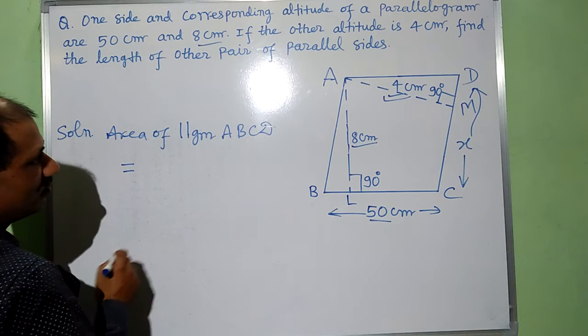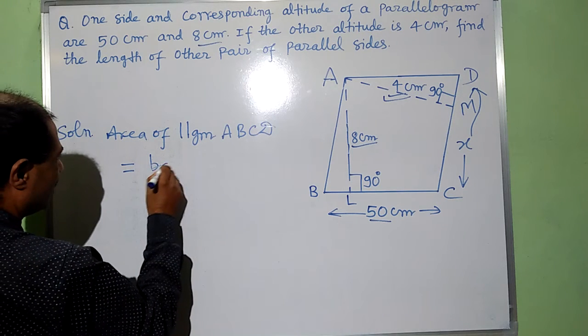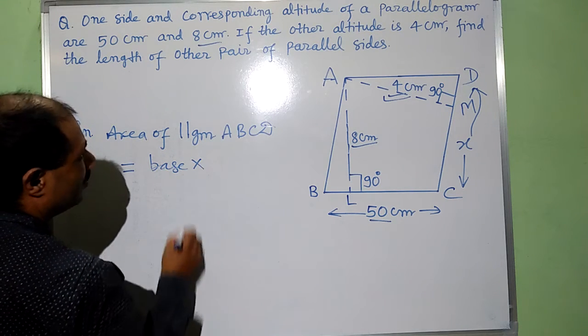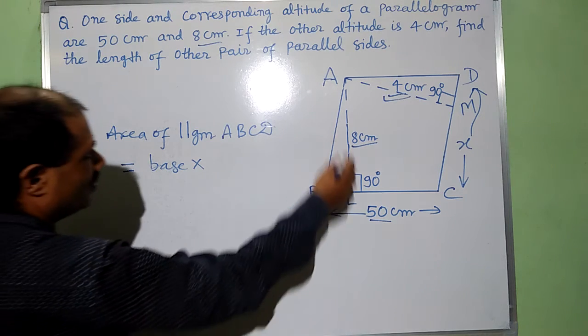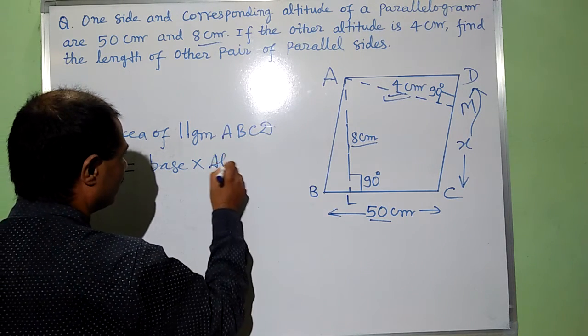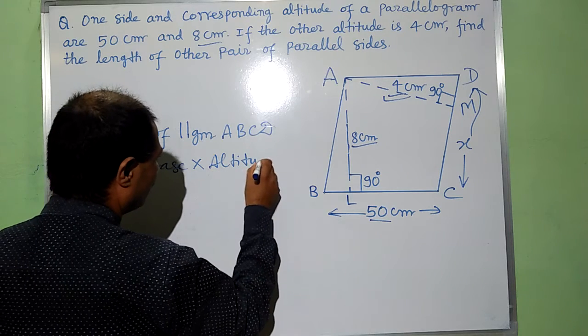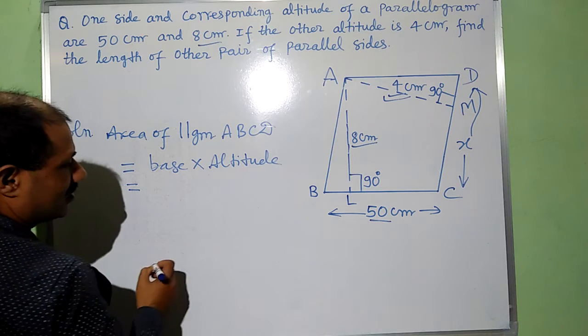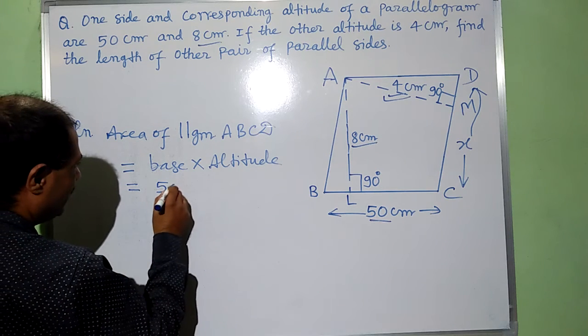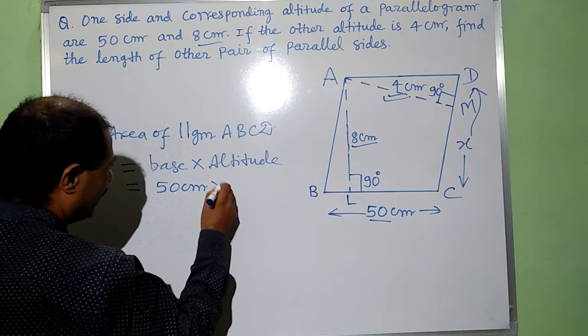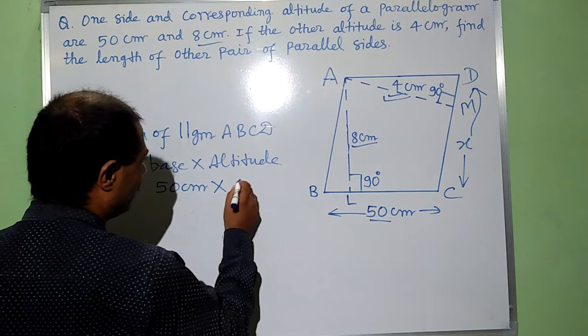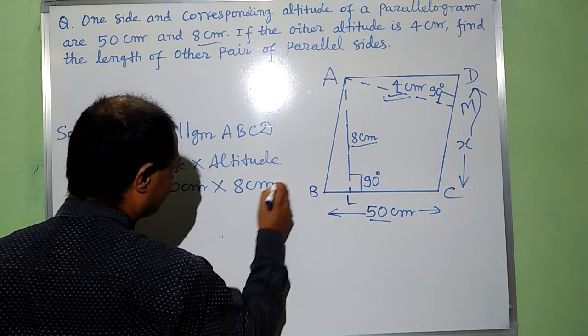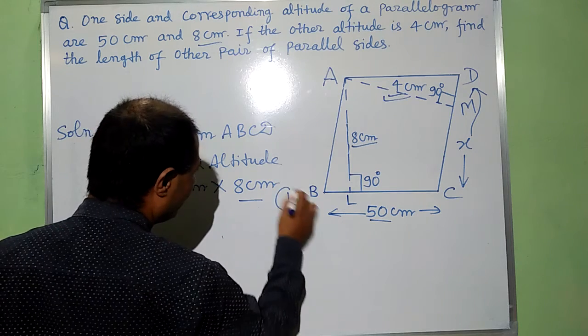Area of parallelogram ABCD is equal to base into altitude, that is base 50 cm and given altitude 8 cm. This is equation 1.